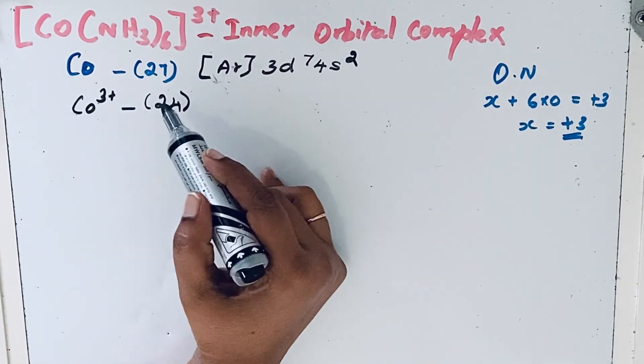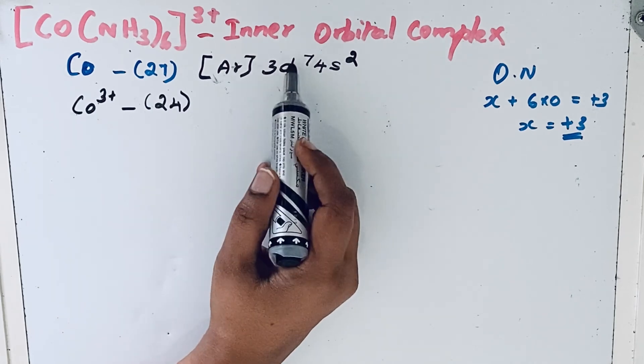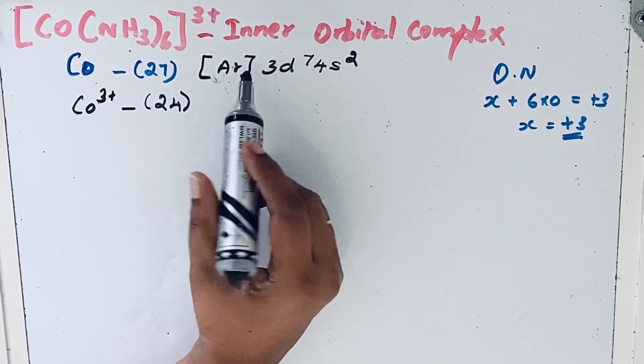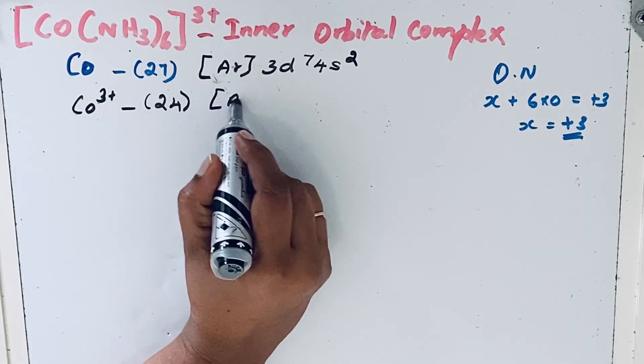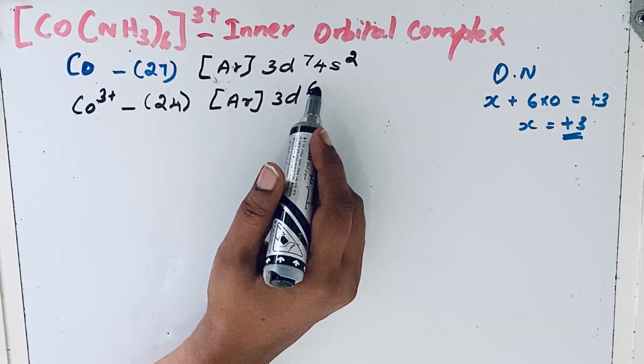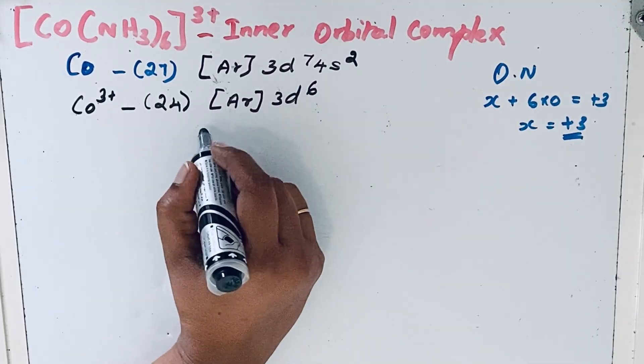We can write the electronic configuration. Two electrons remove from 4s and one from 3d, so we have 3d6 configuration: argon 3d6. We will show this in the form of a box diagram.